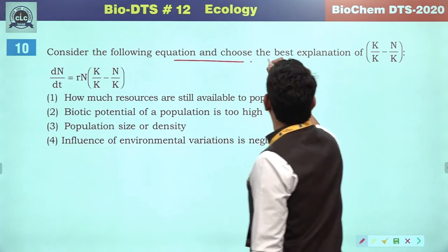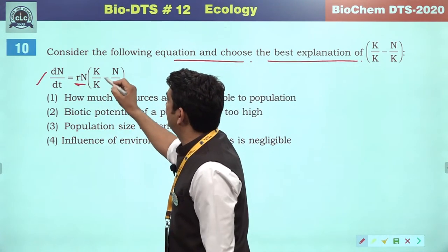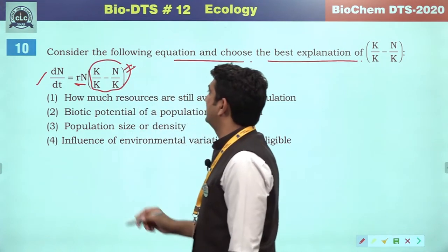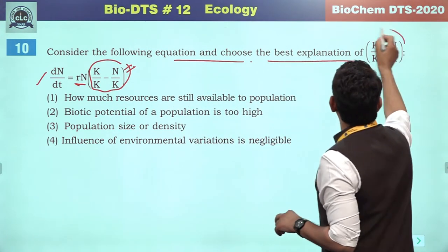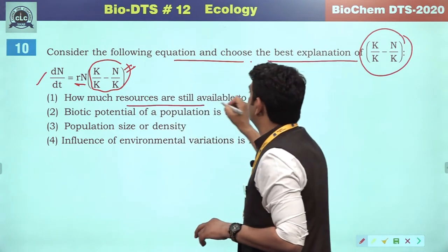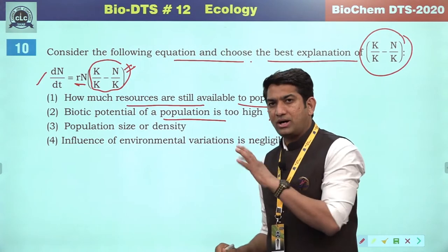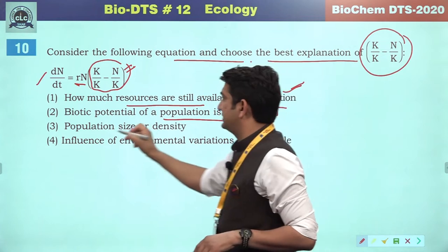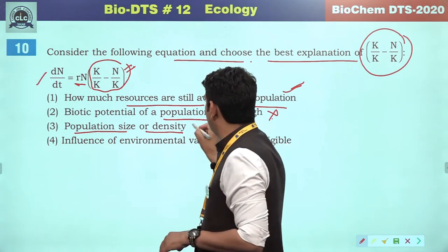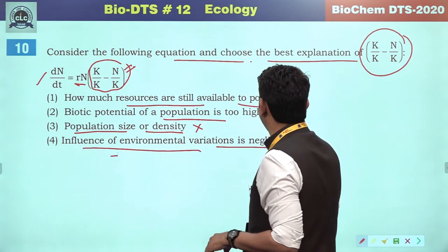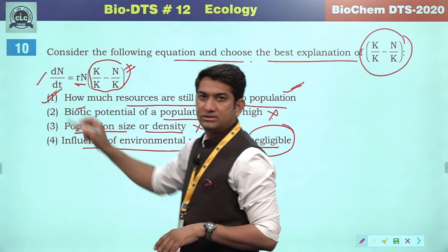Consider the following equation and choose the best explanation. The equation is dN/dt = rN(K−N/K). The term (K−N)/K represents how much resources are still available to the population. It does not represent biotic population rate as high or low, nor does it represent population size or density, nor negligible environmental influence. So the correct answer will be the first option.